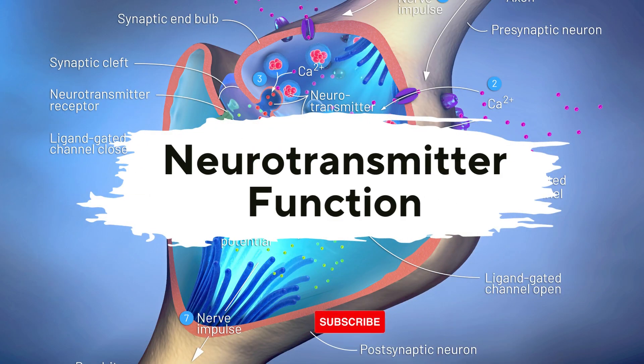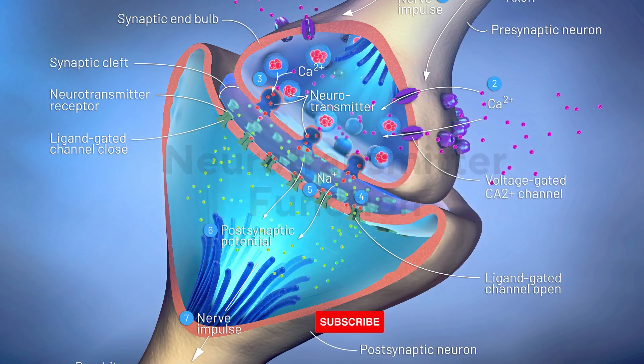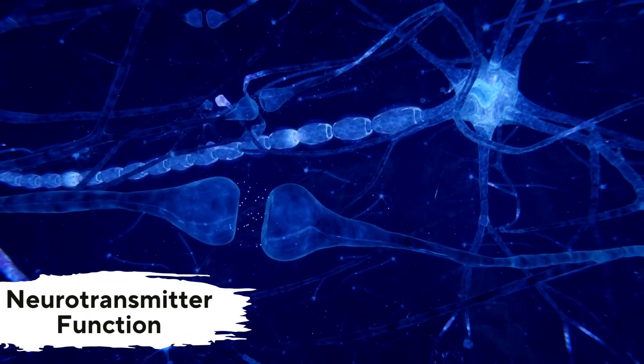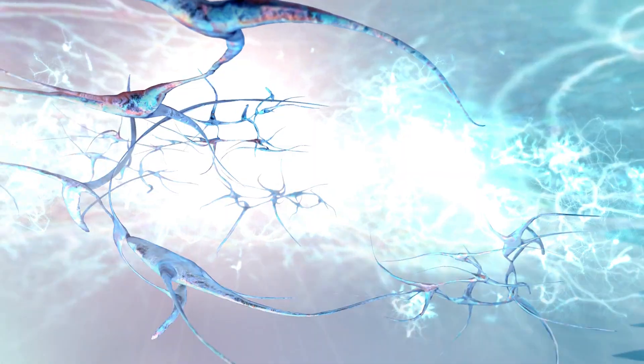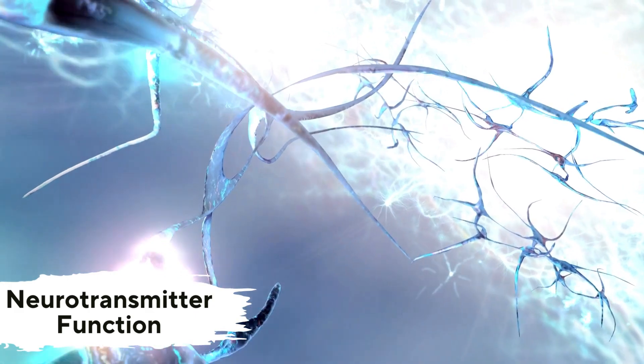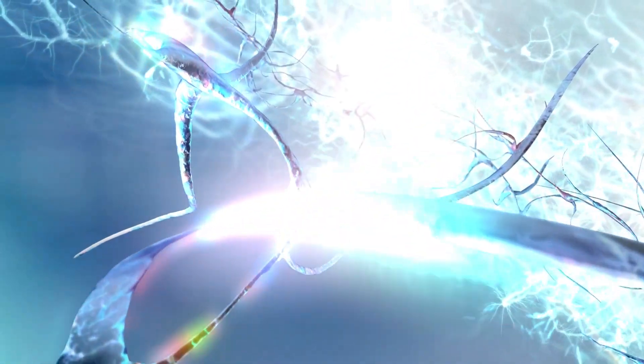Neurotransmitter function. Glutamate serves as a neurotransmitter by transmitting signals between nerve cells (neurons) at synapses. It's released from the presynaptic neuron, travels across the synaptic cleft, and binds to receptors on the postsynaptic neuron, initiating a response.